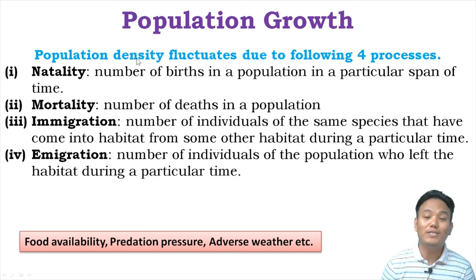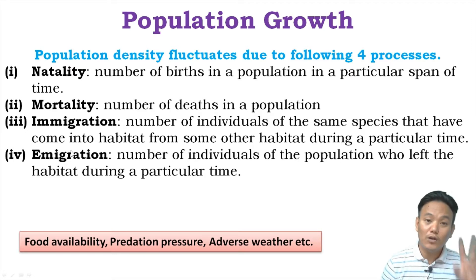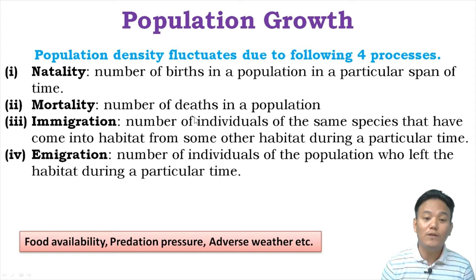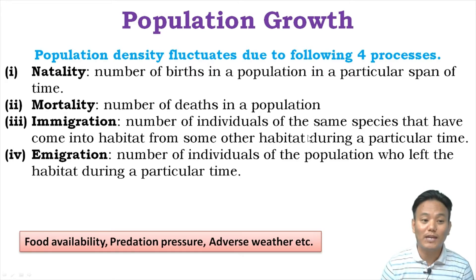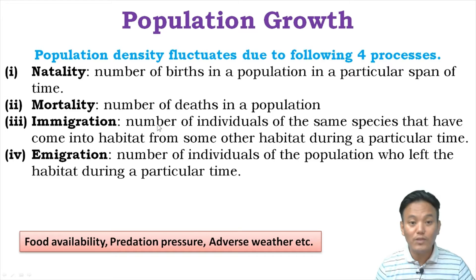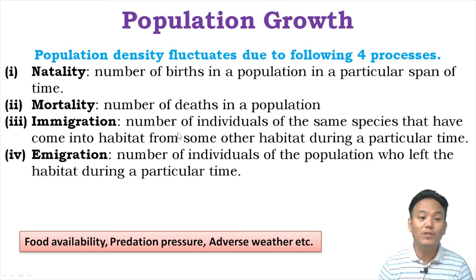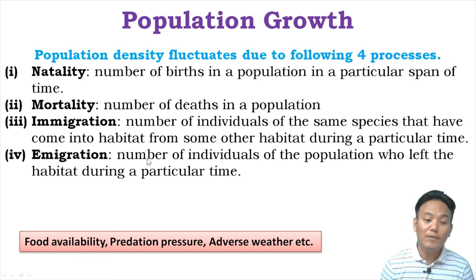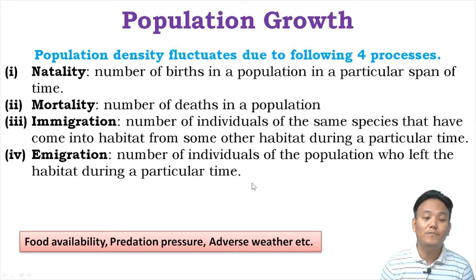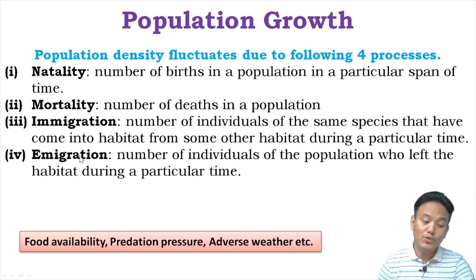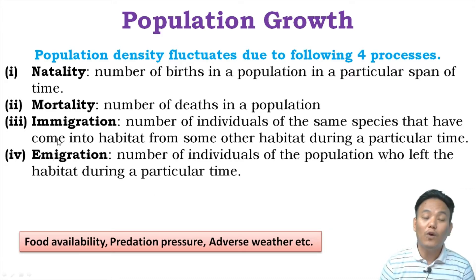We also have immigration and emigration, which are two forms of migration. Immigration is the number of individuals of the same species that have come into a habitat from some other habitat during a particular time — individuals come from another location into the population, thereby increasing population density. Emigration is the opposite: the number of individuals who leave a habitat during a particular time.